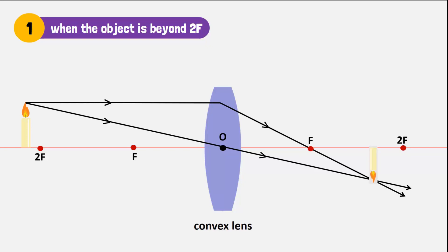As a result, a real, inverted, and smaller image will form where these rays meet.